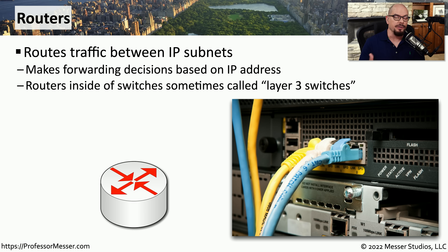A router is a device that forwards traffic between different IP subnets. The router uses the IP address within the packet to determine what the next hop might be on its way to the final destination. Because this routing takes place at layer 3 of the OSI model, we often refer to these as layer 3 devices. And if you have a router configured inside of a switch, you'll see those devices referred to as layer 3 switches.